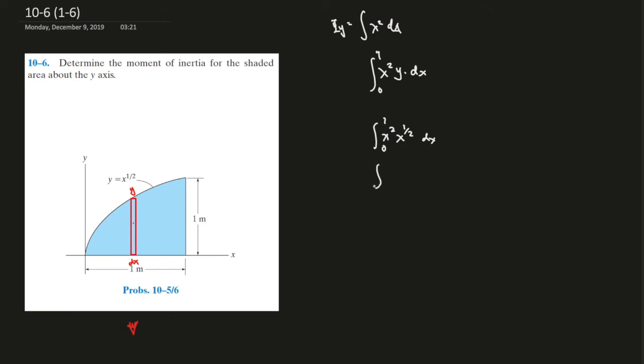And now it's just simple calculus, x to the power of 5 over 2, 1 dx, and x to the power of 7 over 2, 2 over 7, 1 to 0, and the answer should be 2 over 7 millimeter to the power of 4.